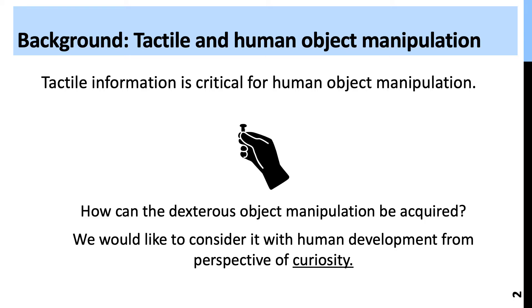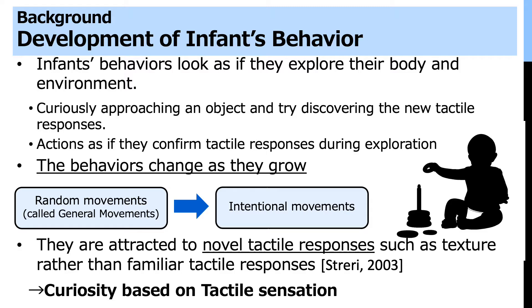Tactile information is critical for human object manipulation. But how can dexterous object manipulation be acquired? We would like to consider it from the perspective of human development, specifically from the perspective of curiosity.